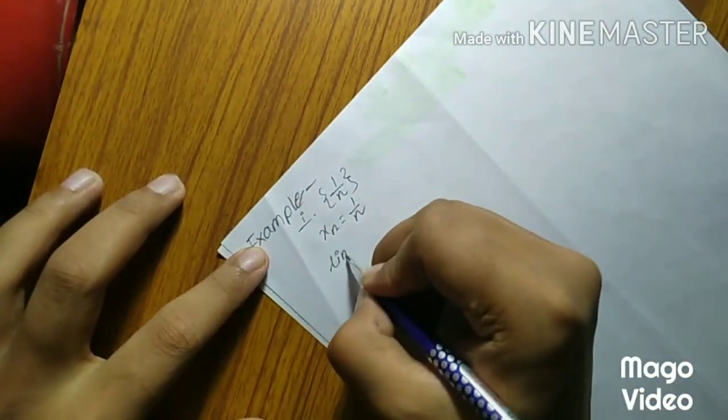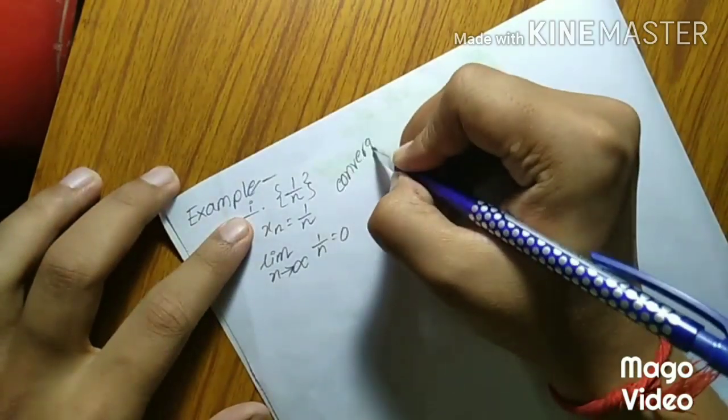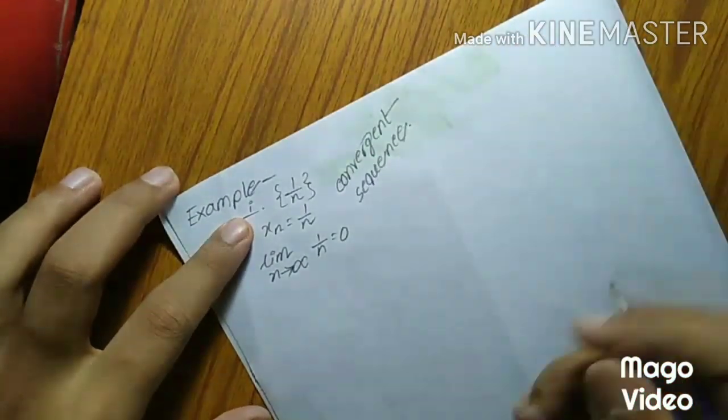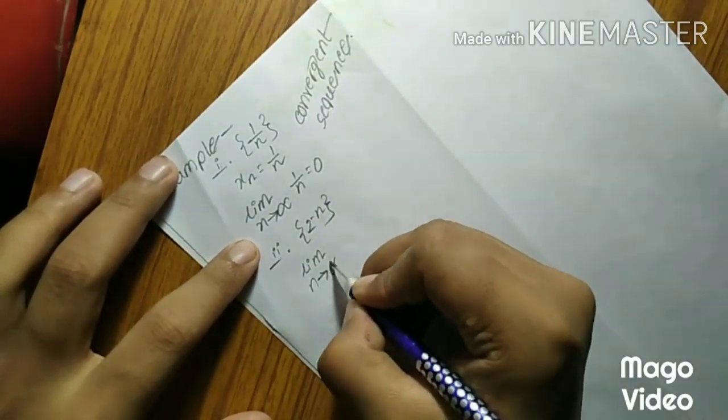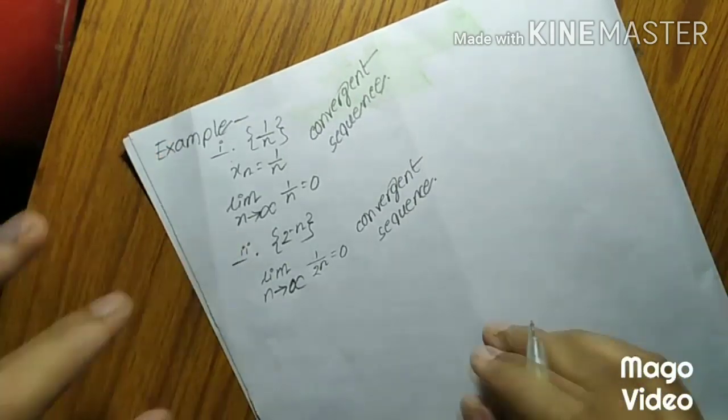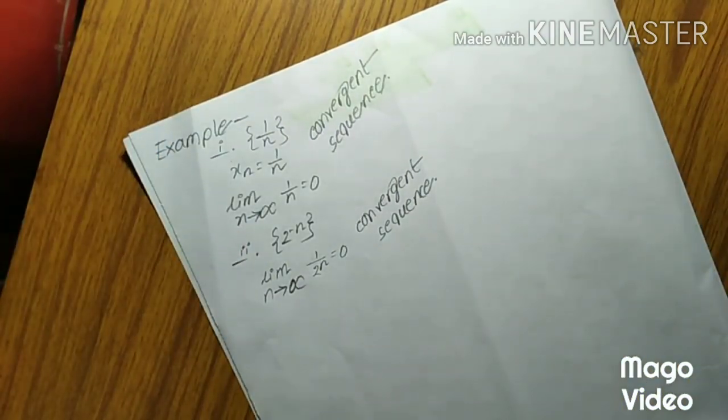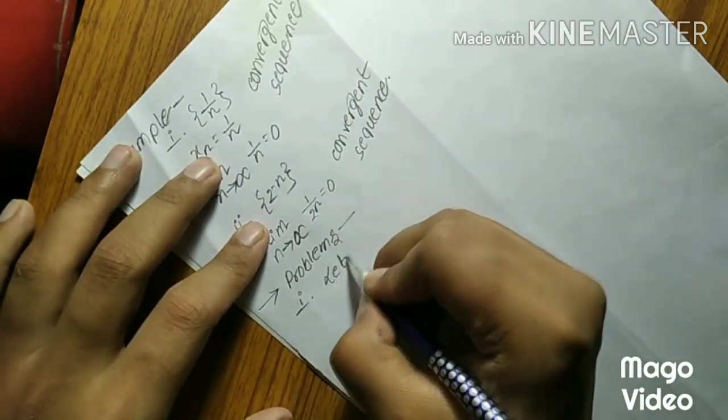Example 1. Sequence 1 upon n, xn equals 1 upon n, limit n tends to infinity, 1 upon n equals 0. Convergent sequence. Sequence 2 upon n, limit n tends to infinity, 1 by 2 upon n equals 0. Convergent sequence.